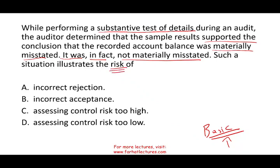So simply put, they took a sample and did substantive testing, and what they concluded is the balance is materially misstated. But in reality, the account is not materially misstated. The answer choices are: risk of incorrect rejection, incorrect acceptance, assessing control risk too high, or assessing control risk too low. Most CPA exam questions — if you have basic understanding, you should go down to 50-50 immediately. Take out anything to do with assessing control risk. We're not talking about control risk. C is out. D is out.